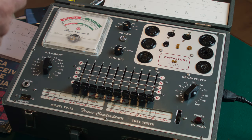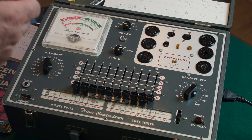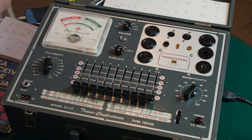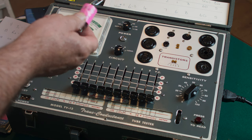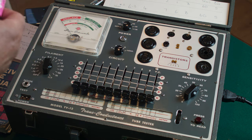This is a short demonstration on using a model TV12 tube tester from Superior Instruments Company. We're going to do a couple of tests on the 6AQ8 valve, and the first one we're going to do is the shorts test leakage test on a 6AQ8 or an ECC85.